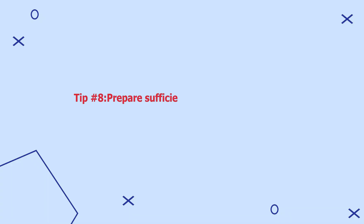Tip number eight: prepare sufficient notes after observations. After going through an observation, an observer should take time to prepare notes and have rich narrative descriptions. Such notes should provide full descriptions of the people in the observed setting and the events under observation.